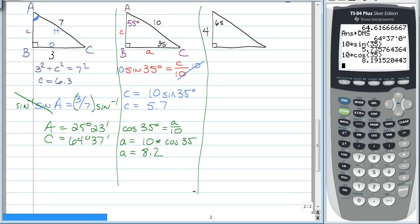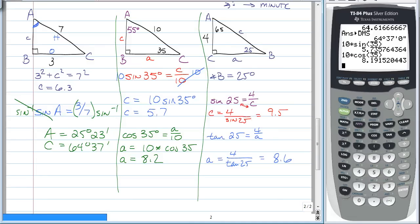The last example is very similar to the problem we just did, so I'm going to ask you to pause the video and try that example on your own. If you did it correctly, you should have that big B is 25 degrees, little c is 9.5 units, and little a is 8.6 units. If you have your variable down in the denominator, remember — to solve for c, this becomes c is equal to 4 divided by the sine of 25, and this one becomes 4 divided by the tangent of 25, and you would get all of these.